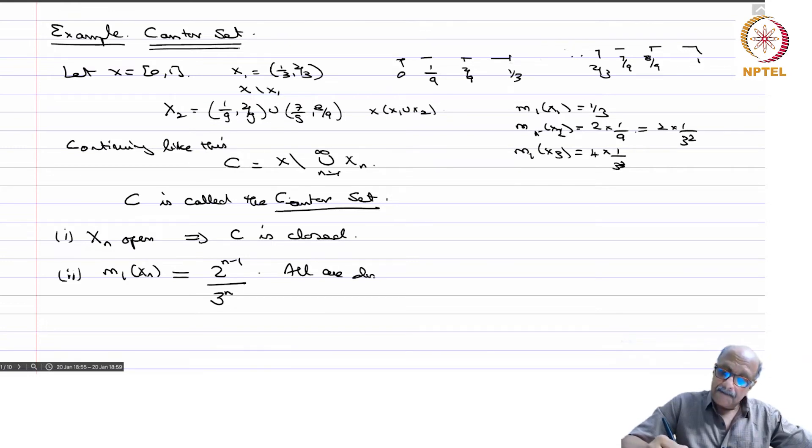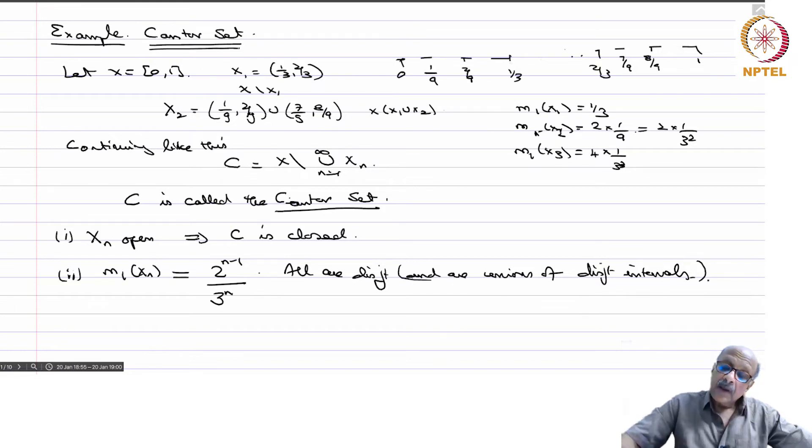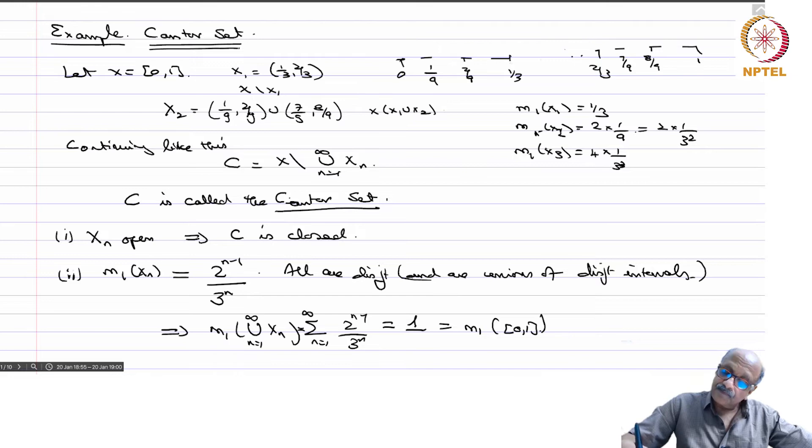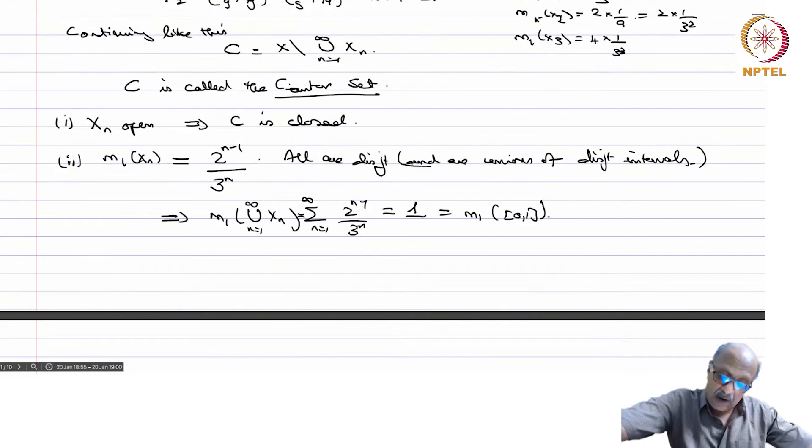And all are disjoint and all unions of disjoint intervals. That is how we computed the measure of each of this. Therefore, this implies that the measure of union xn is sigma n equals 1 to infinity 2^(n-1)/3^n, and that is a simple calculation you will just get 1. It's 1/3 into a geometric series and then you will get the answer is 1, but this happens to be measure of [0,1] also. So from [0,1] I have removed a set of measure 1. So this implies that measure of the Cantor set equals 0.